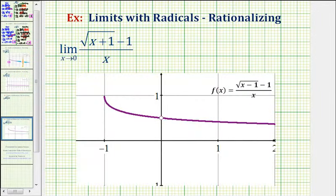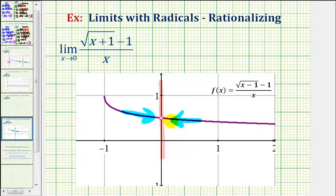Here's the graph of our function, and here's x equals zero. We want to approach zero from the left side and right side to see if we approach the same function value. We can tell graphically we are approaching the same function value, even though this graph does have a hole at x equals zero — meaning the function does not exist at x equals zero — the limit does still exist, and it looks like it will be positive one half.